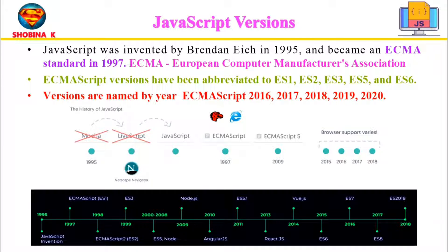After decades of improvement, JavaScript has become one of the most popular programming languages of all time. It all started in 1995 when Brendan Eich created JavaScript in a span of 10 days. Since then it has seen multiple versions and updates. JavaScript was invented in 1995 and became an ECMA standard in 1997.